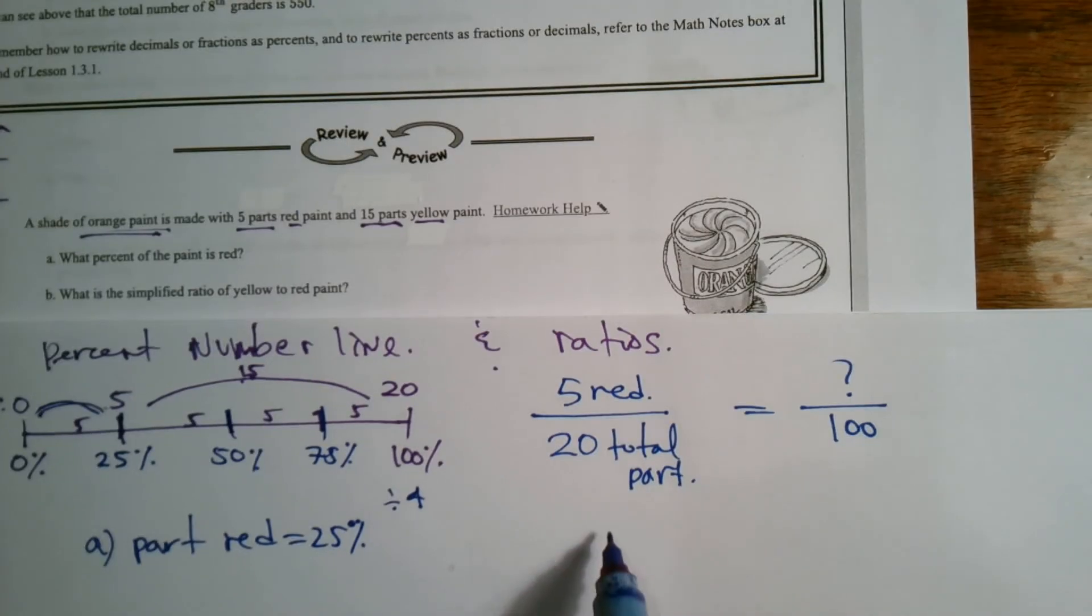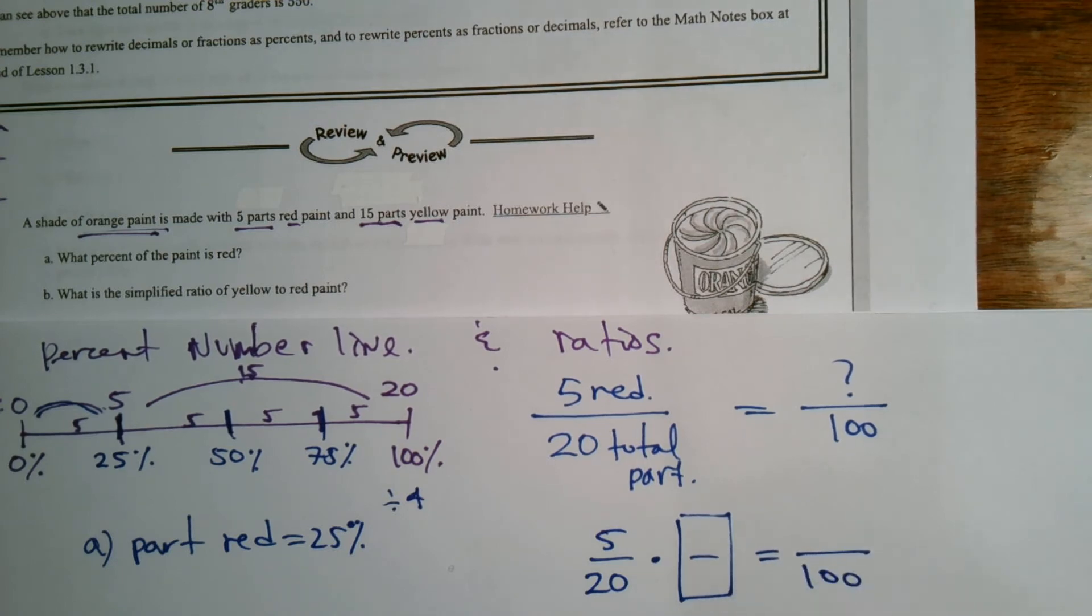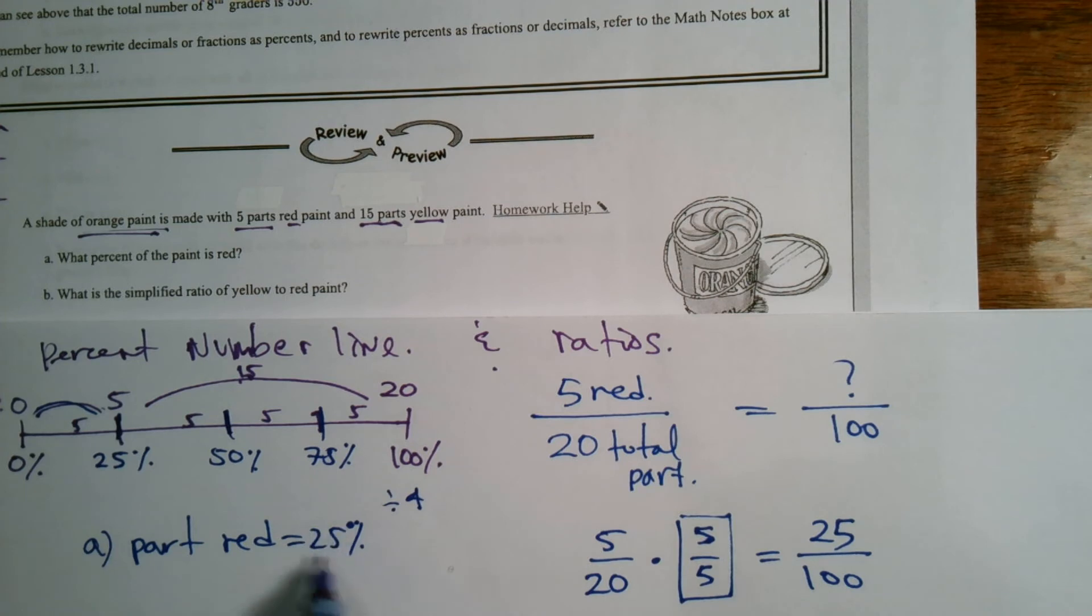So I can rewrite. Remember, when we have ratios, you can treat them as fractions. So I want to take and multiply by some big giant one to end up with something over 100. Well, 20 times five is 100. So my giant one is five over five. So five times five. Sure enough. There we go. Twenty five.